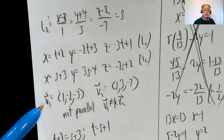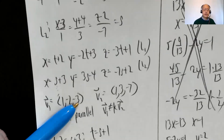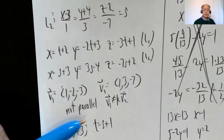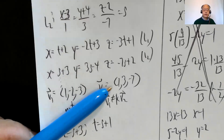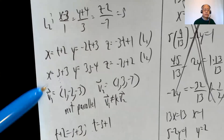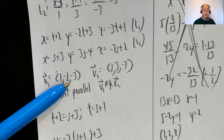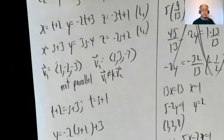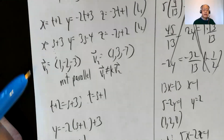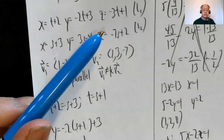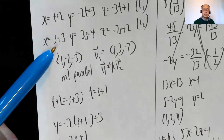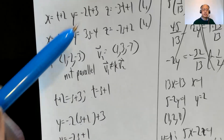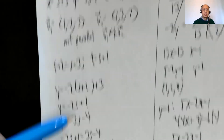The direction vector V1 is ⟨1, −2, −3⟩ — the coefficients of T — and V2 is ⟨1, 3, −7⟩ — the coefficients of S. They are not scalar multiples of each other, so they're not parallel. To determine skew or intersecting, X, Y, and Z must all match: T + 2 = S + 3 gives T = S + 1. Also, −2T + 3 = 3S − 4, and −3T + 1 = −7S + 2.